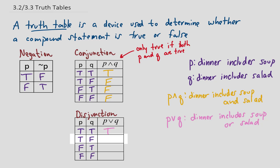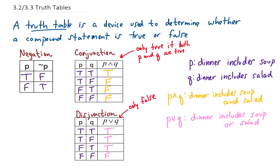In the second row, p is true and q is false, meaning they bring soup but not salad. But the menu says dinner includes soup or salad — is that a true statement? Yes, they brought us one of the two. The same is true for the next row: they're not bringing soup but they are bringing salad, and the statement is still true. But in the fourth row, they don't bring soup and they don't bring salad, so the statement is not true. For a disjunction, the only way for the statement to be false is if both p and q are false.